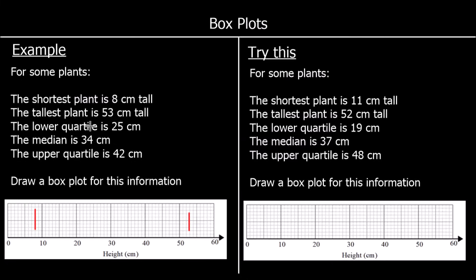The lower quartile is 25cm. The median is 34cm. And the upper quartile is 42cm. So what we've done is we've split our data into quarters.